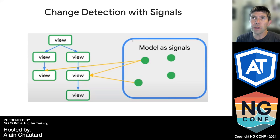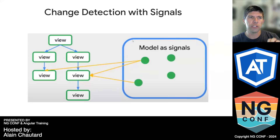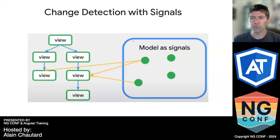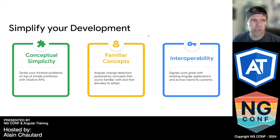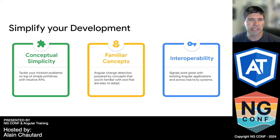Angular has never had the ability to refresh individual views before, and now we have it thanks to signals — that's very powerful. The idea is that this is why it's so important to start switching to signals and adopting them in your architecture. The end goal is to have that perfect, optimized change detection, and we're going to do some live coding to get you into the signals API through real examples.